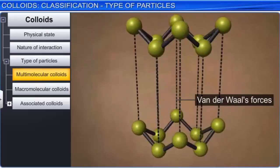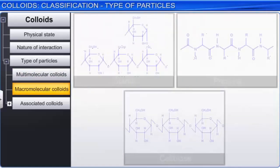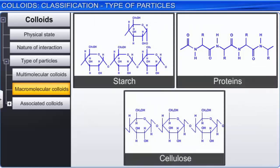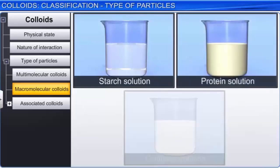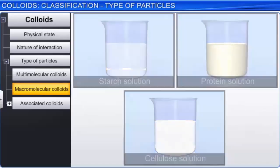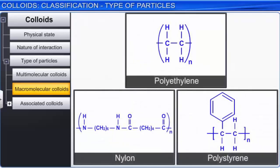The other category of colloids is macromolecular colloids. Certain substances like starch, proteins, and cellulose have molecules of big size which lie in the colloidal range. The solutions of these substances in suitable solvents are called macromolecular colloids. Synthetic macromolecules such as polyethylene, nylon, and polystyrene also form colloids when dispersed in suitable solvents. Macromolecular colloidal solutions are stable and resemble true solutions in some respects.